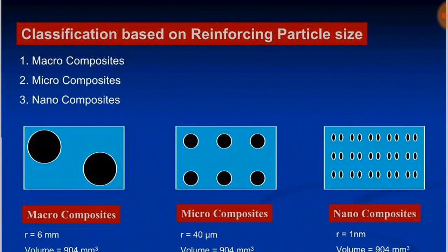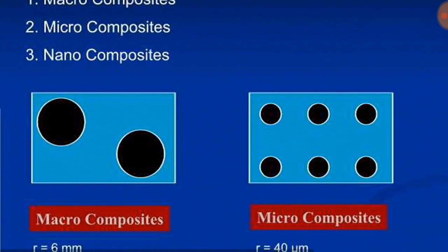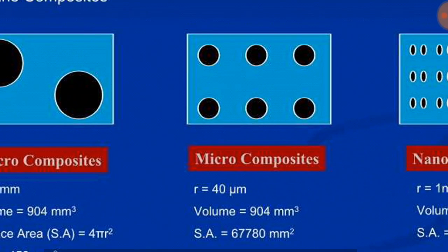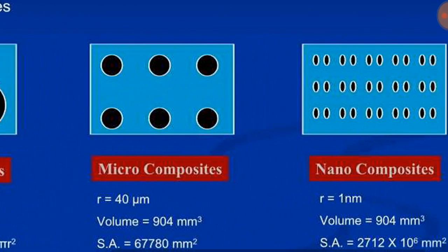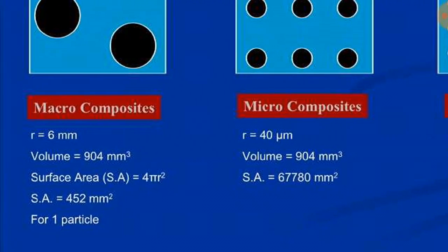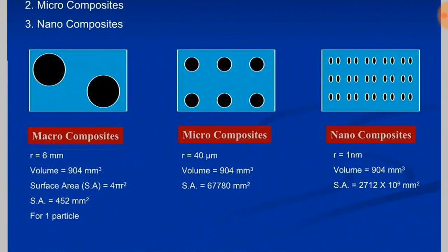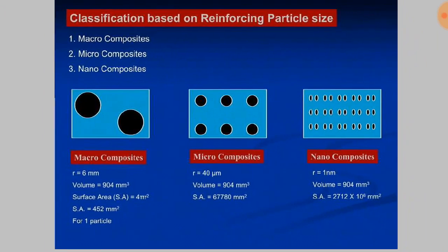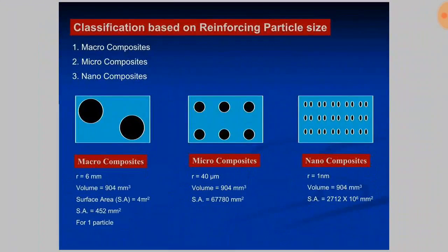Classification based on reinforcing particle size also plays a major role. Macro composites have a particle radius of around 6 mm, micro composites around 40 micrometers, and nano composites around 1 nanometer. The volume of these three composites may be the same, but the surface area differs. Since strength depends on surface area, nano composites offer more strength than micro composites, and micro composites offer more strength than macro composites.